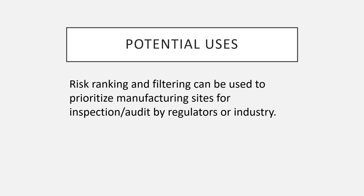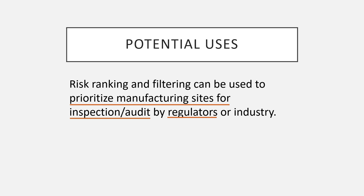Risk ranking and filtering can be used to prioritize manufacturing sites for inspection or audit by regulators or industry — for example, prioritizing inspections of your manufacturing sites or vendors. For instance, if a vendor consistently supplies materials with no failures and no delays, you give weightage to those factors and the vendor may receive a high ranking — like a five-star rating — meaning inspection of that facility could be required only once in five years.